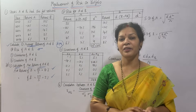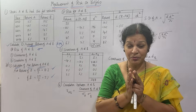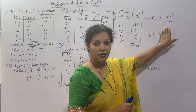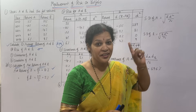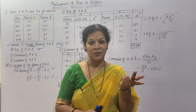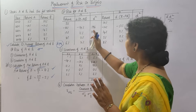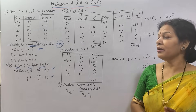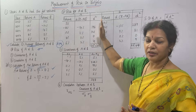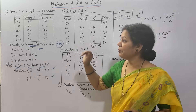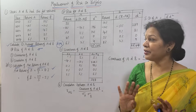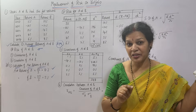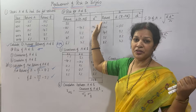Now let us focus on the standard deviation — risk of A and B. For standard deviation, the formula is root of sigma D-squared by N. We need D first, then D-squared. I have prepared a table with the heading 'Calculation of Risk of A and B.' First three columns are for A, next three for B. D is calculated as R minus AR, where R is returns and AR is average returns — i.e., deviations from the mean.